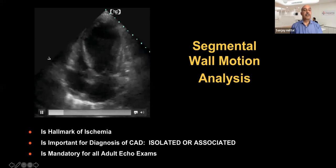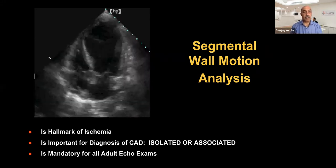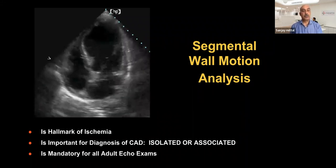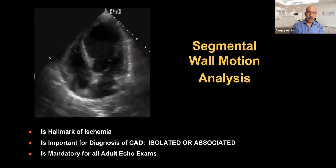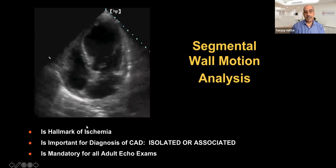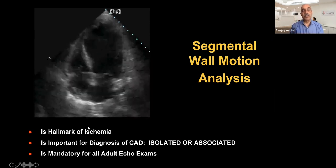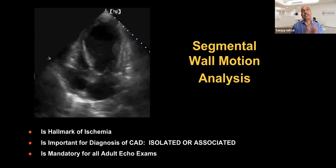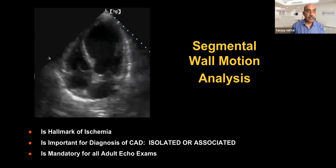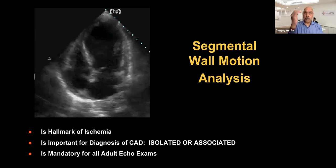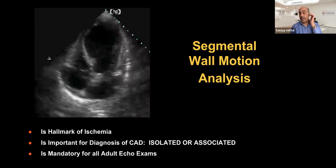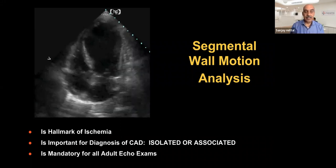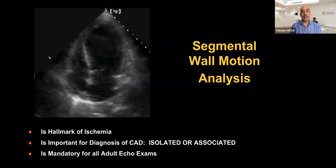I'm going to focus on the left ventricle alone today, not the right ventricle. Whenever we have wall motion abnormalities like this, it is almost certainly ischemic heart disease until proved otherwise. Many times we have patchy myocarditis, sarcoidosis, and other issues where particular segments become fibrotic and dysfunctional. But if we find wall motion abnormality, for all practical purposes it is a hallmark of ischemia.